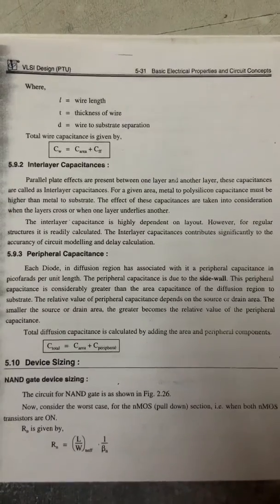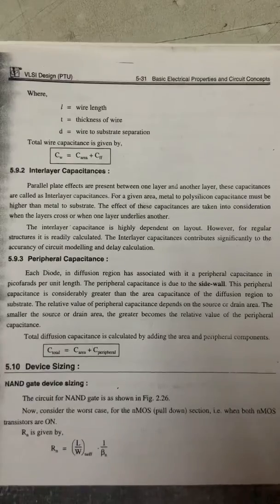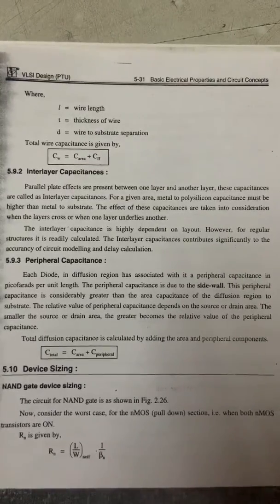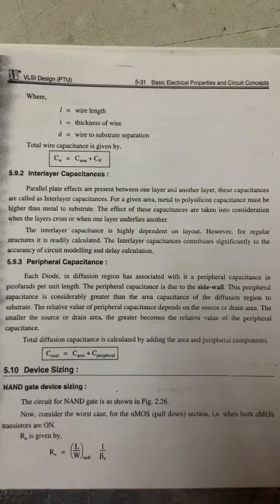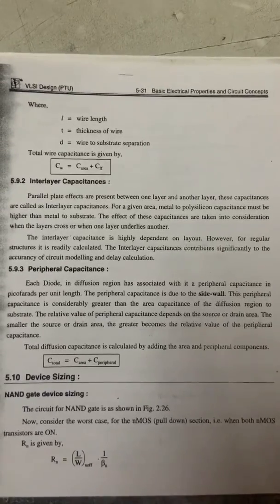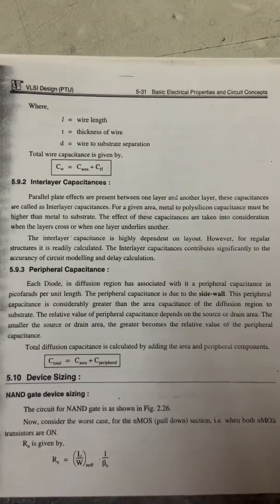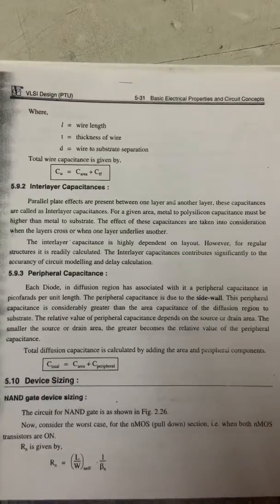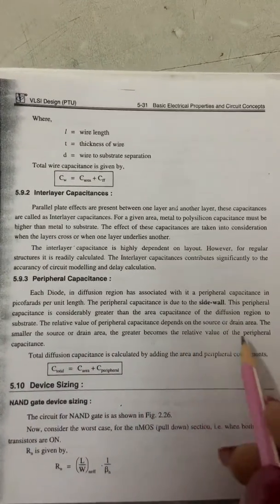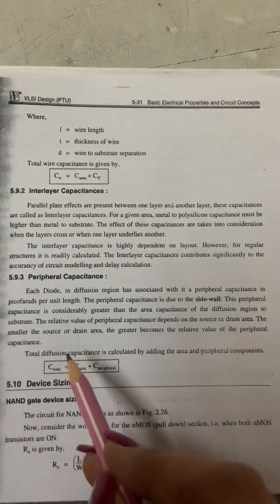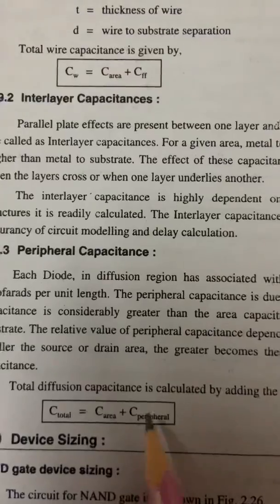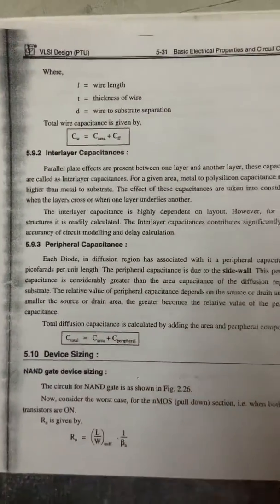The third category of wiring capacitance is peripheral capacitance. Each diode in a diffusion region has an associated peripheral capacitance in picofarads per unit length. This peripheral capacitance is due to the sidewall and is considered greater than the area capacitance of the diffusion region to substrate. The smaller the source or drain area, the greater becomes the relative value of peripheral capacitance. Total diffusion capacitance is calculated by adding the area and peripheral components: total capacitance = area capacitance + peripheral capacitance.